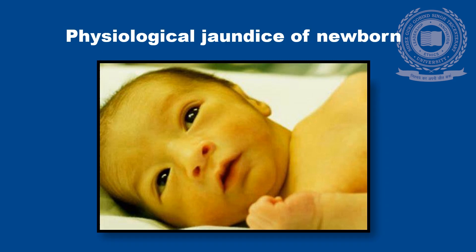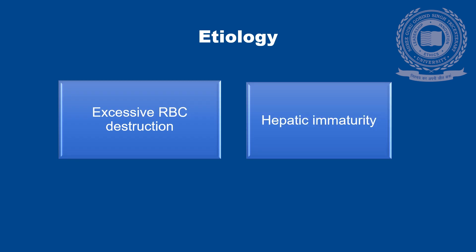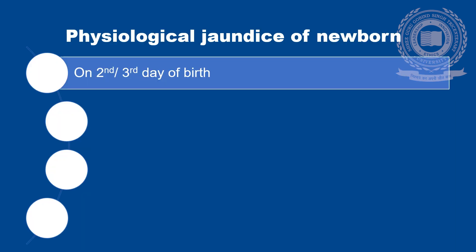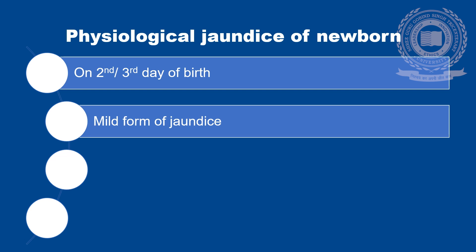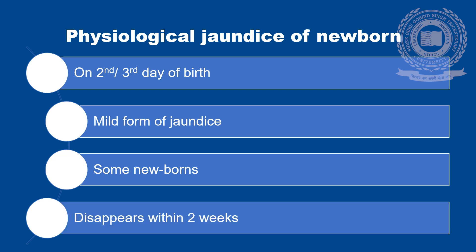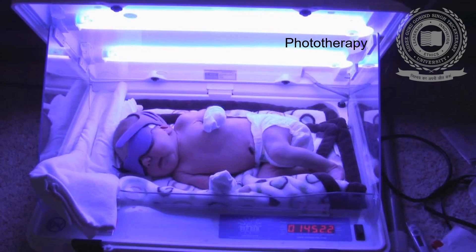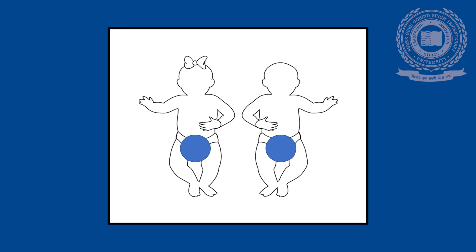Now discussing neonatal jaundice, also called physiological jaundice of the newborn. The main causes are excessive RBC destruction and hepatic immaturity, which leads to a rise in the level of unconjugated bilirubin. It appears on the second or third day of birth, is mainly mild, present in some newborns, and disappears within two weeks. Phototherapy is advised — exposure of the skin to white light converts bilirubin to lumirubin, which is formed after photoisomerization of bilirubin. Lumirubin has a shorter lifespan and is more soluble than bilirubin, hence excreted out more easily. The eyes and gonads are protected during phototherapy.